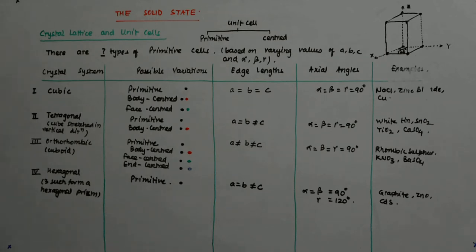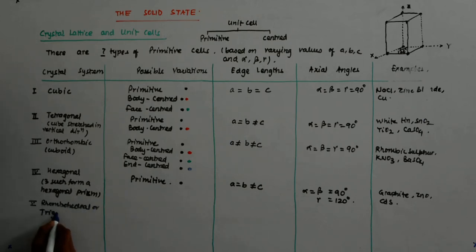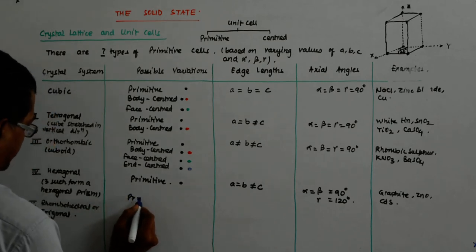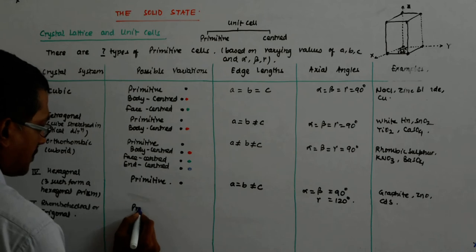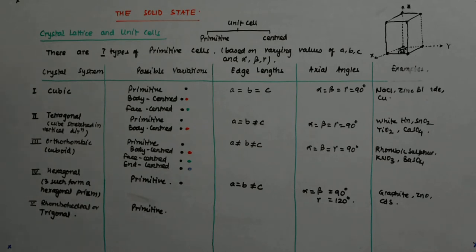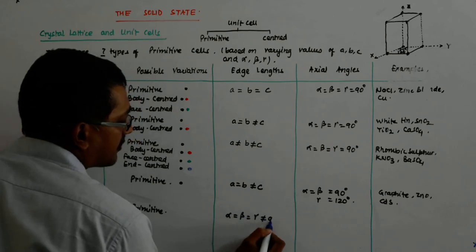Rhombohedral or trigonal — this is also primitive. For rhombohedral: alpha equals beta equals gamma, but none of them is equal to 90 degrees. Alpha equals beta equals gamma, but none of them are equal to 90 degrees. See, all the mistakes you must be making are due to non-parallel lines — that is the source of error, nothing else.